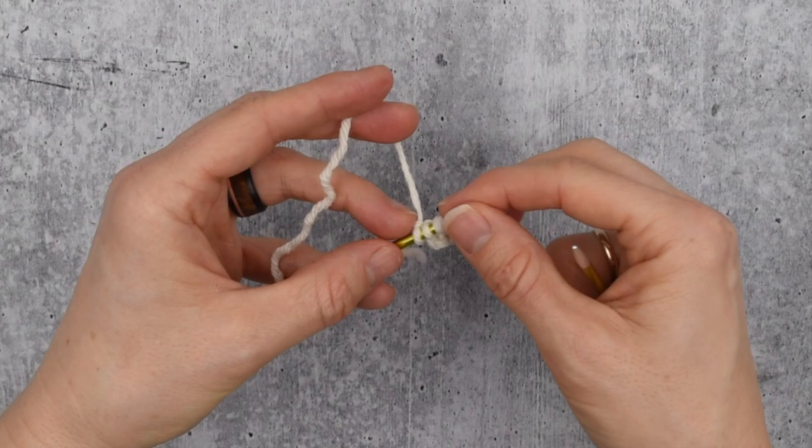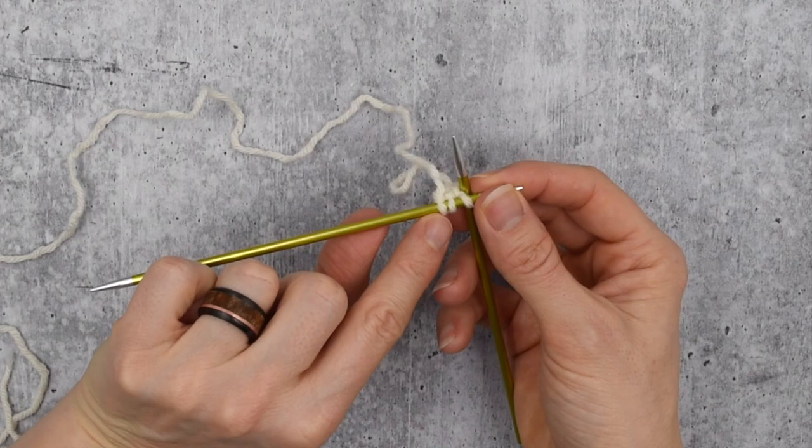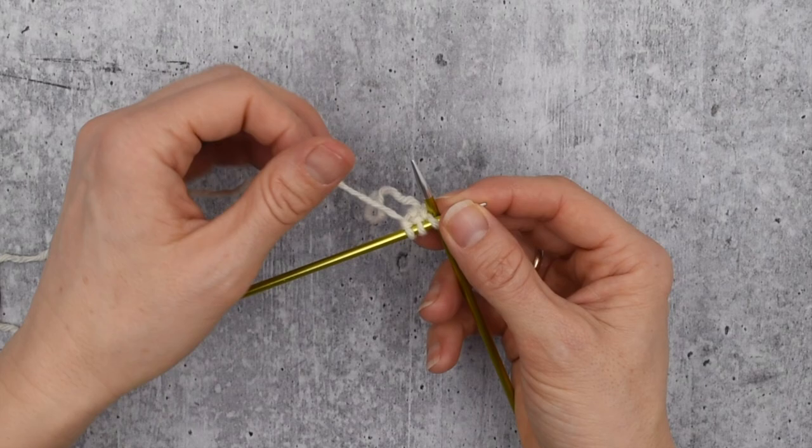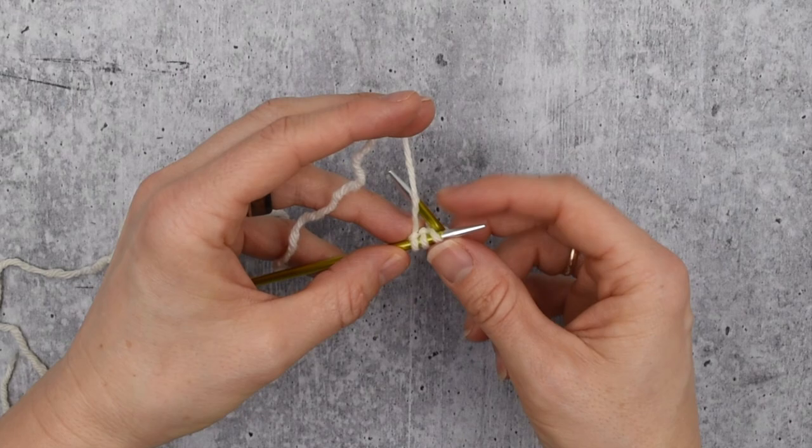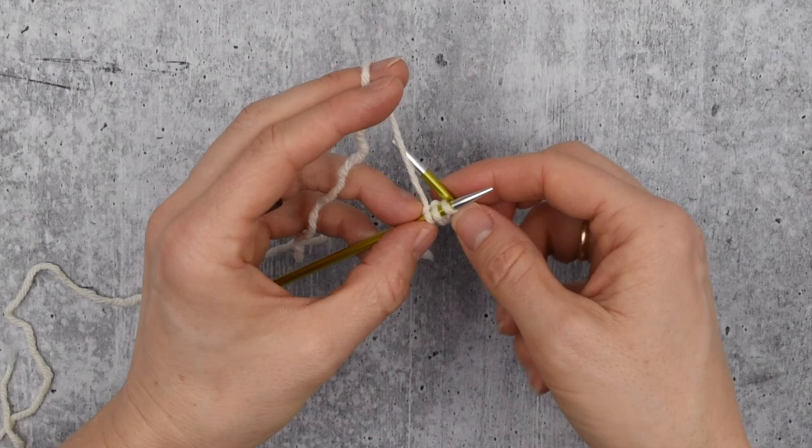So I've slid them to the tip here and now we've got the yarn coming off the last stitch we knitted. One of the nice things about knitting is you can figure a lot out by paying attention to where the yarn is coming from. The yarn will come from the last stitch we worked and we're going to bring it across and work it just as we would a normal knit stitch.